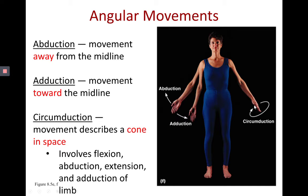If the sagittal midline runs down the middle of the body, when the arm moves away that's abduction, and when it moves back that's adduction. To make a cone shape in space, the arm must move forward — flexion — toward the body — adduction — back — extension — and away from the body — abduction. All four movements together perform circumduction.